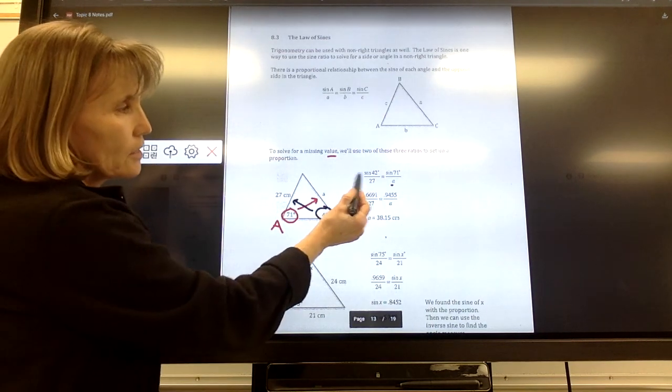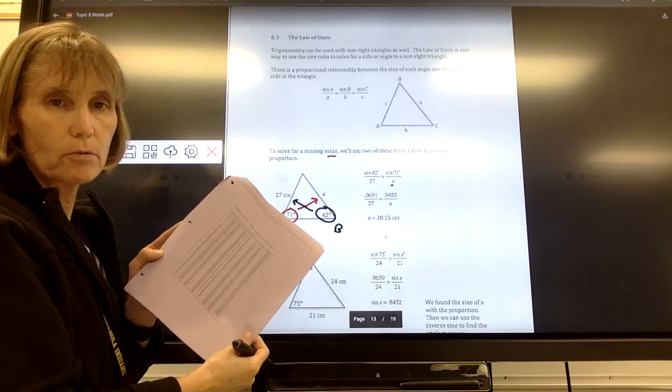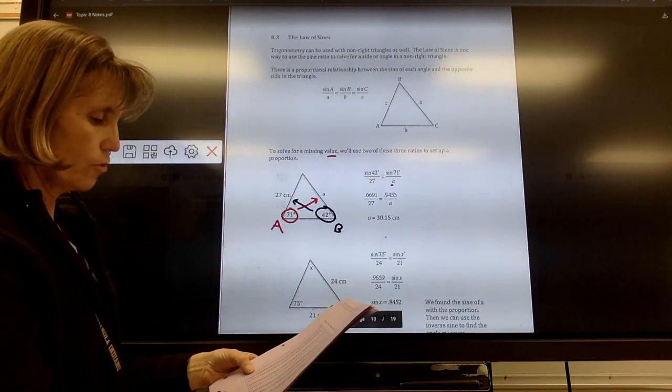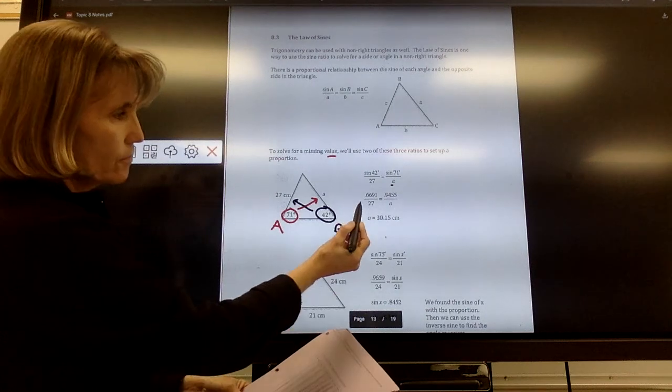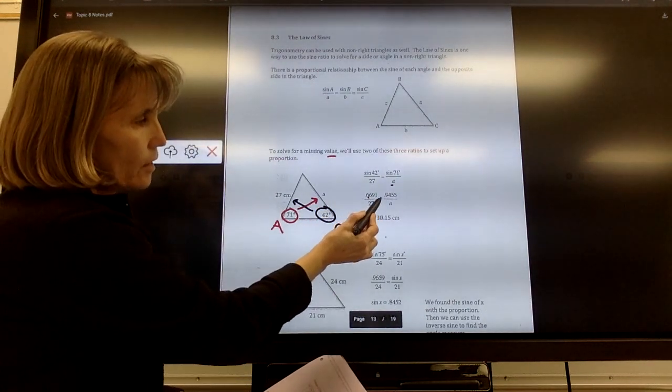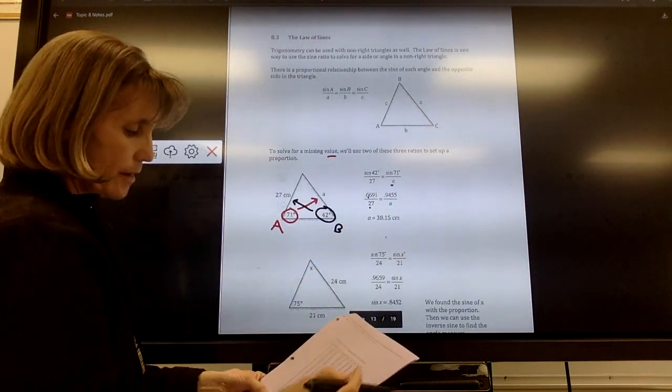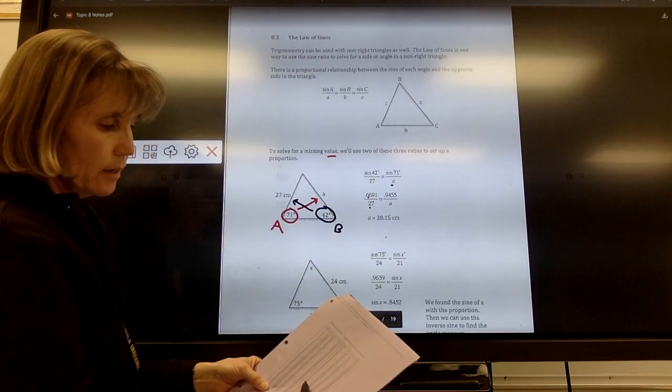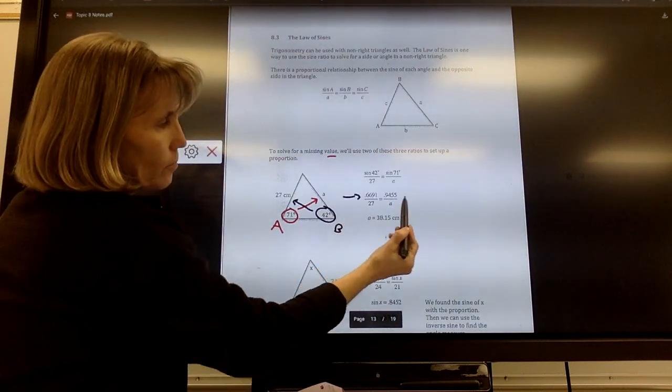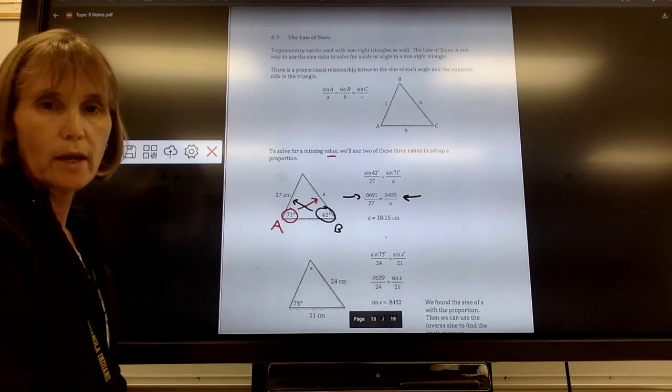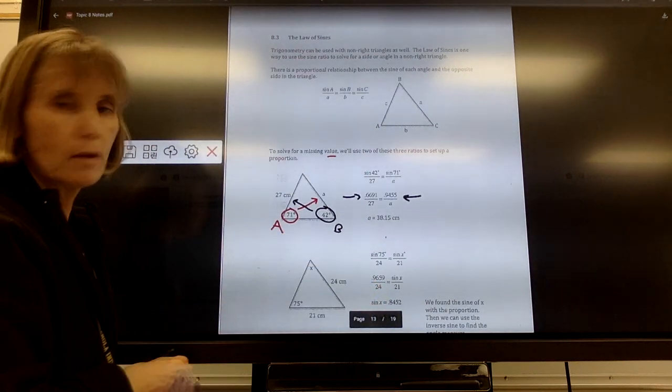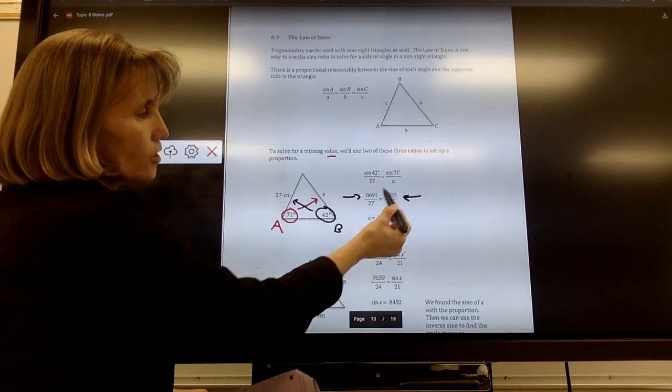When we talk about the sine of 42 degrees, we're back to using our table, just like we've been using it. I can look up the decimal for the sine of 42 degrees, and I get this value of 0.6691 over its side length, 27, is equal to, I can look up the sine of 71 degrees. Look up 71, and I go over to its sine. Check out on your table and make sure that you are locating those decimals. You're getting those numbers off the table.